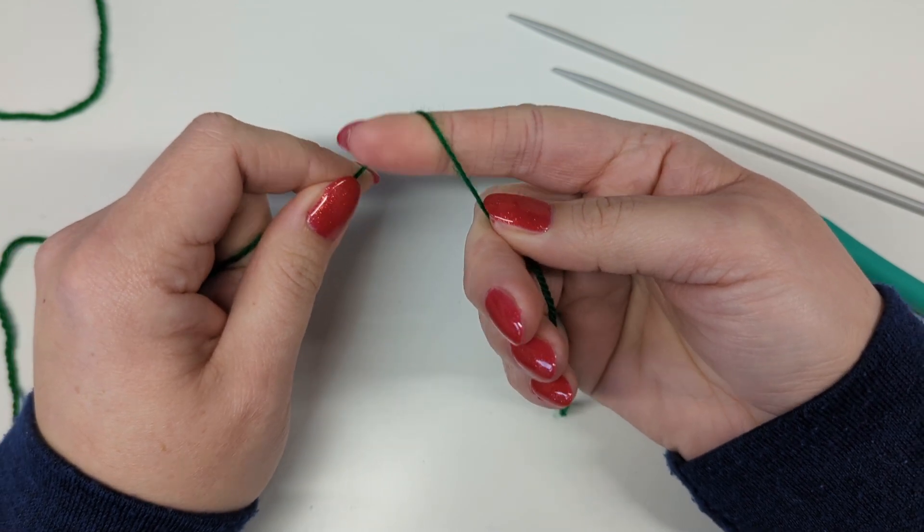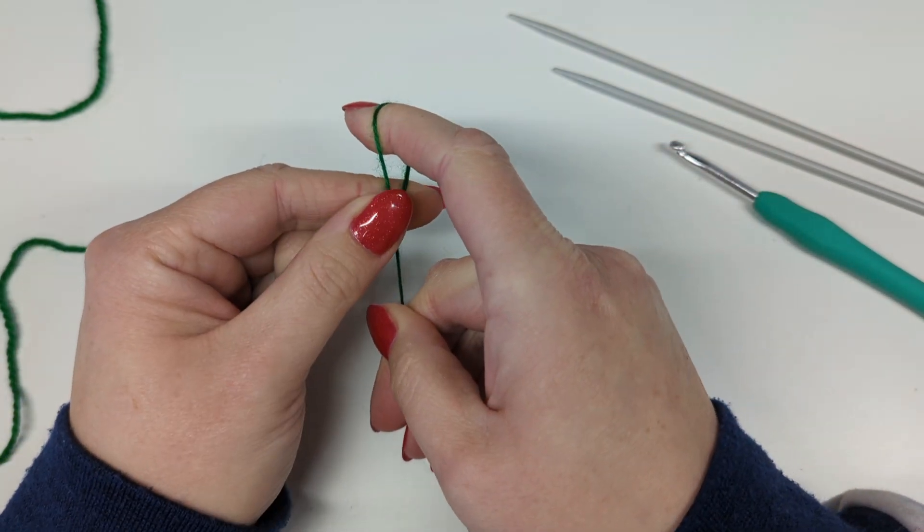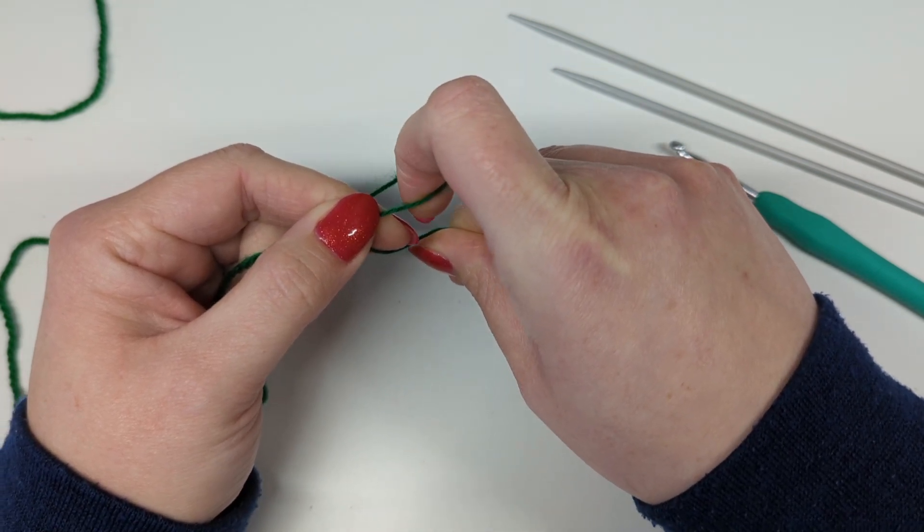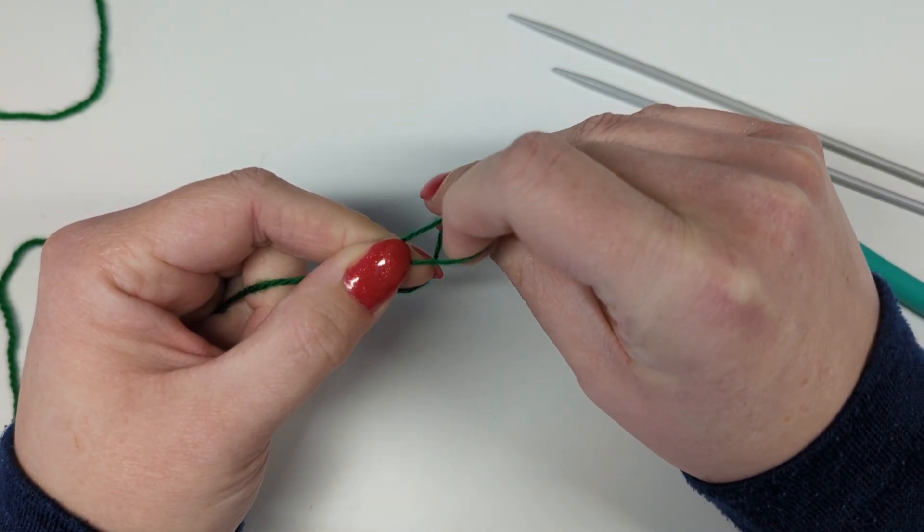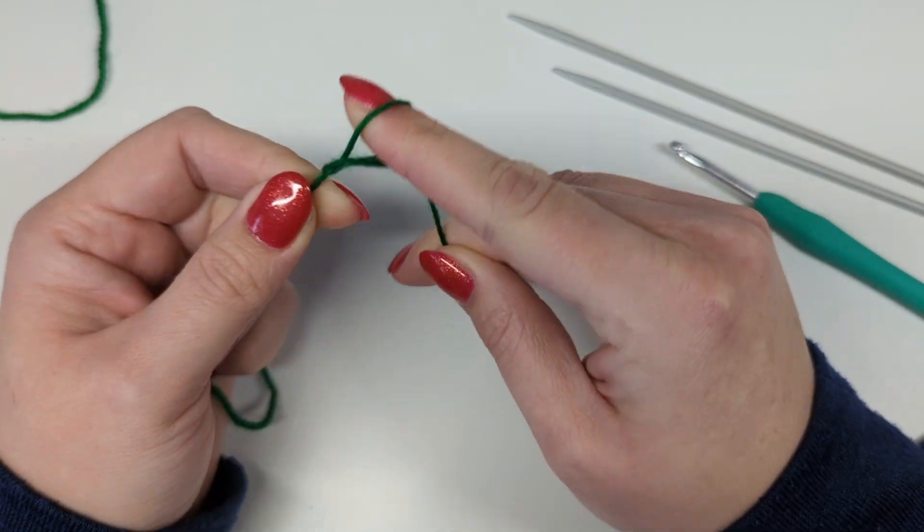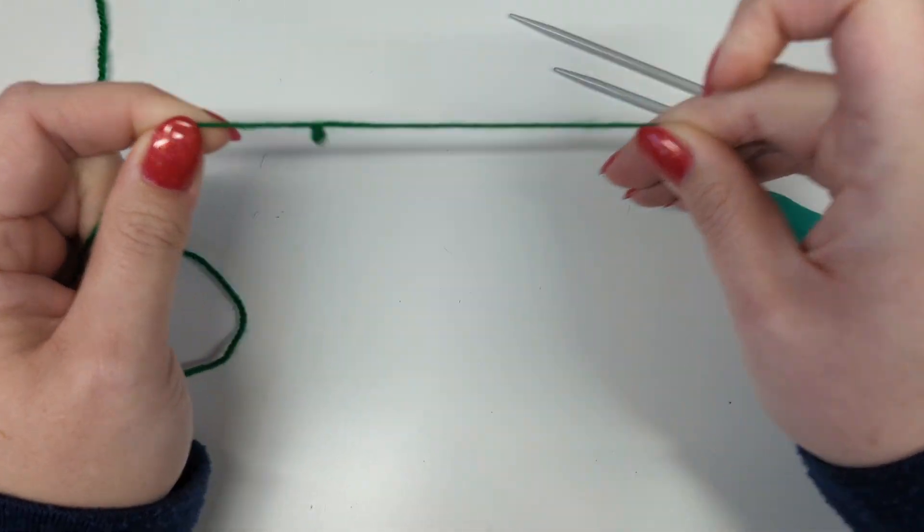So with your right index finger underneath like this you're going to flip it around, grab the crossover there with your left hand and then taking this right finger over the tail of the yarn. You're going to grab it with your nail and just pop it through and that's another slipknot.